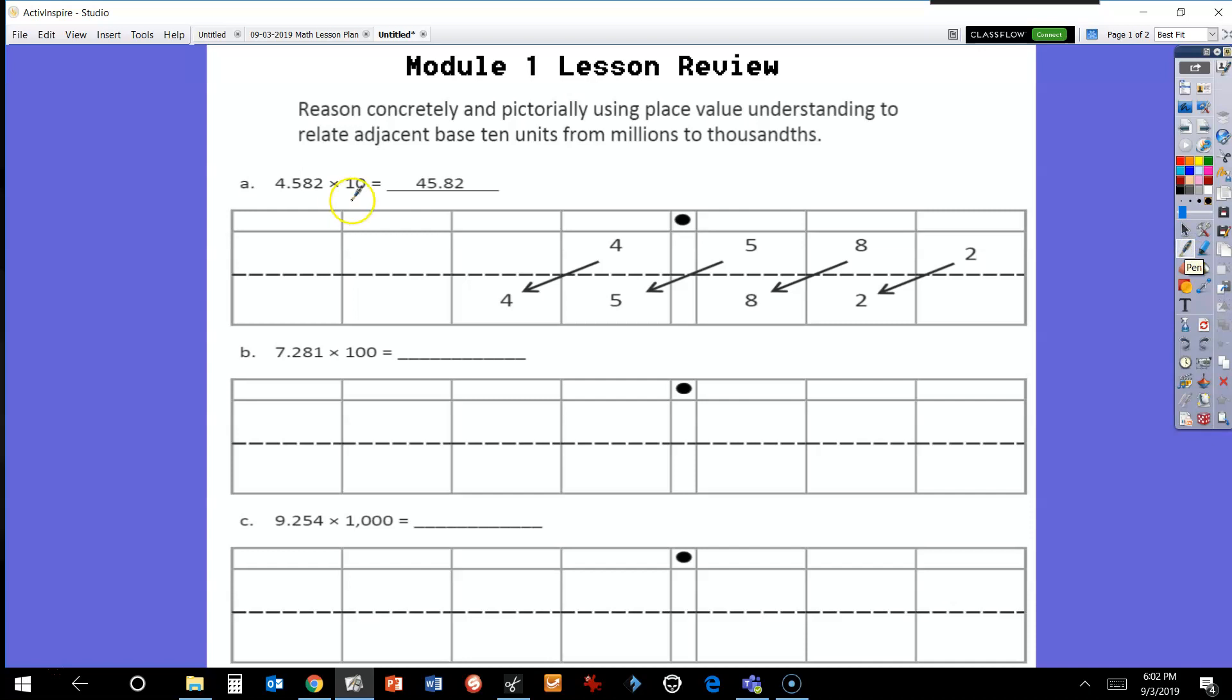We know that this number is going to get bigger because we're multiplying by 10. If you notice here, when we multiply by 10, it moved over one place value. Now the 4 is times 10, 5 is times 10, 8 is times 10, and the 2 is times 10, causing each number to move over one place value. The 4 went from the ones place to the tens place, the 5 went from the tenths place to the ones place, the 8 went from the hundredths place to the tenths place, and the 2 went from the thousandths place to the hundredths place.